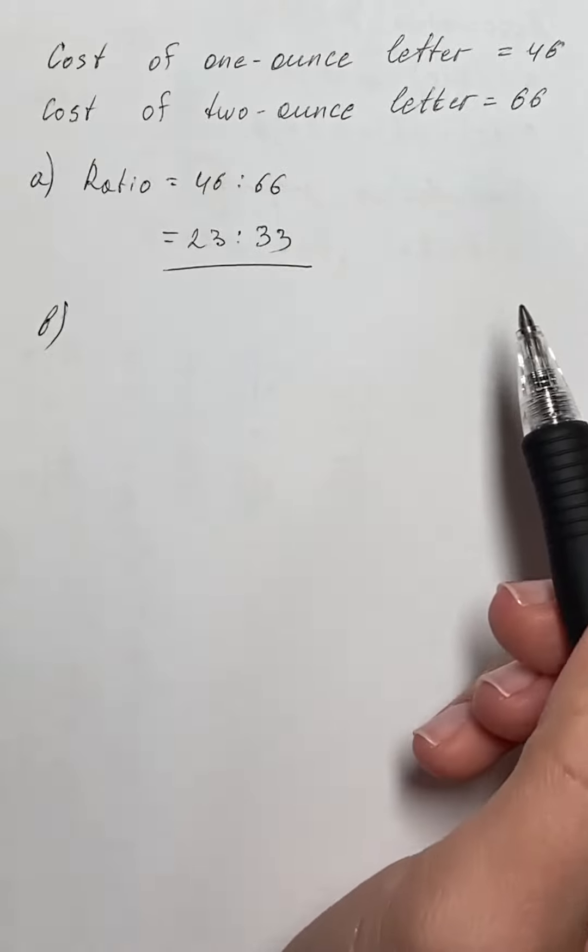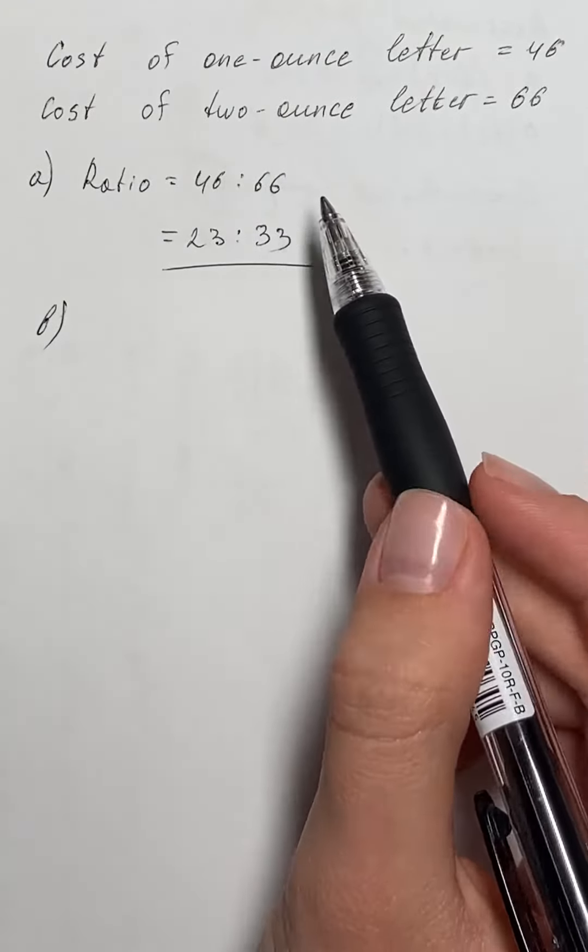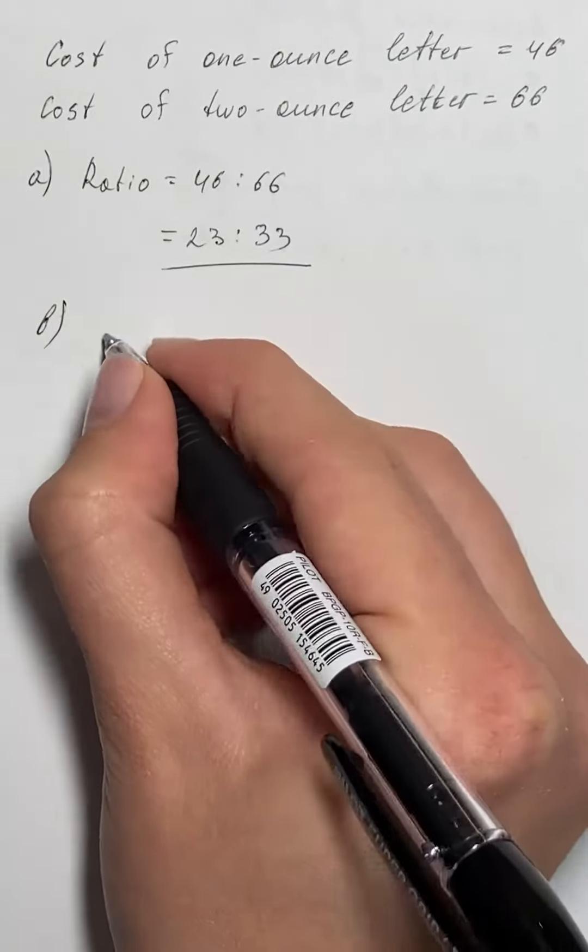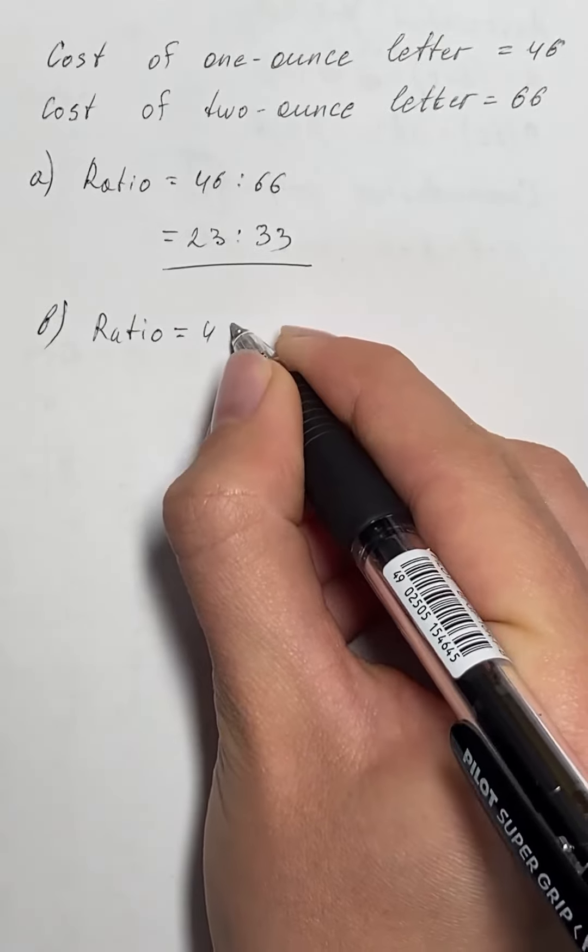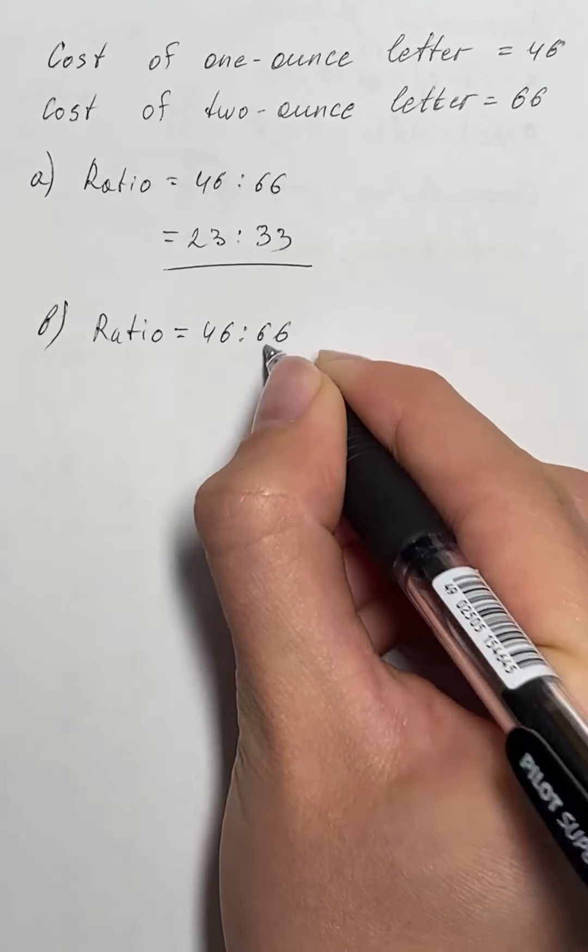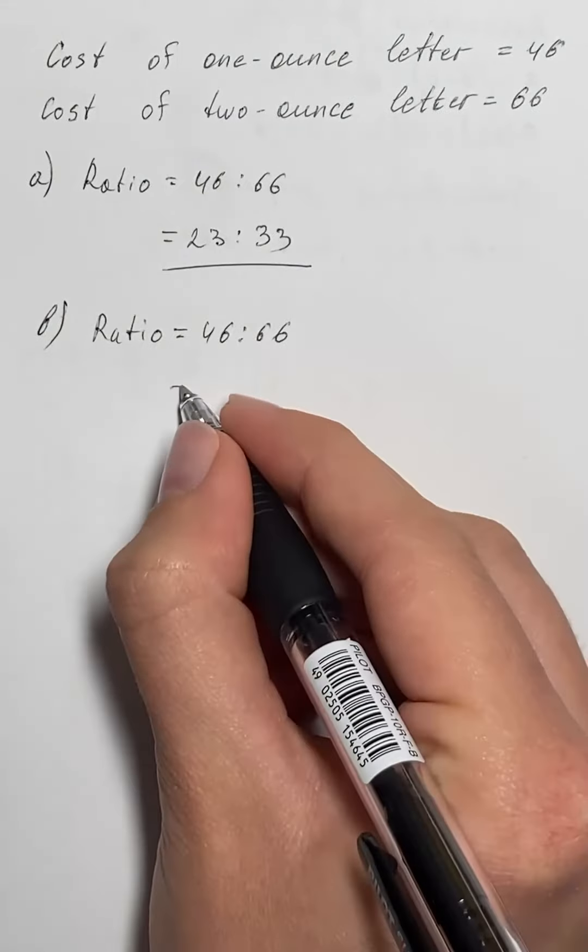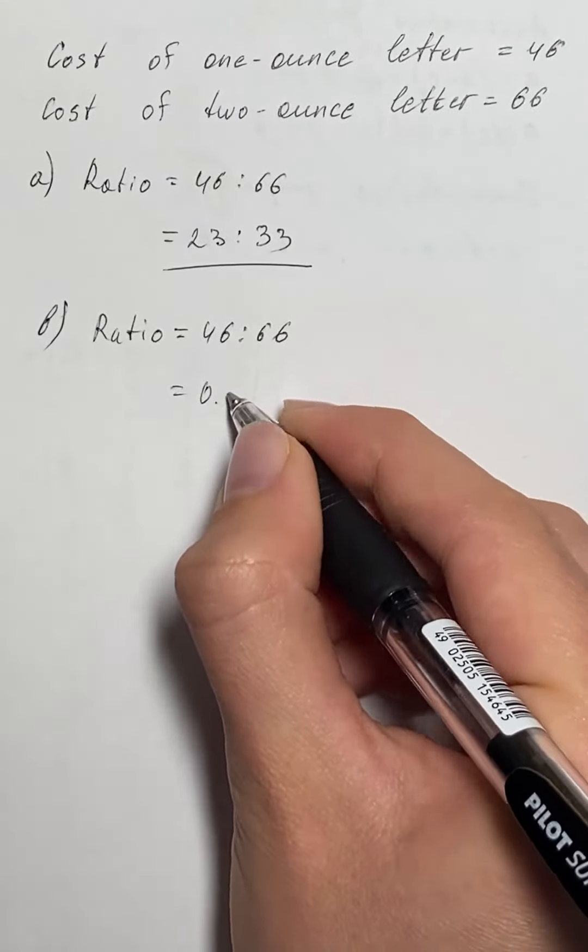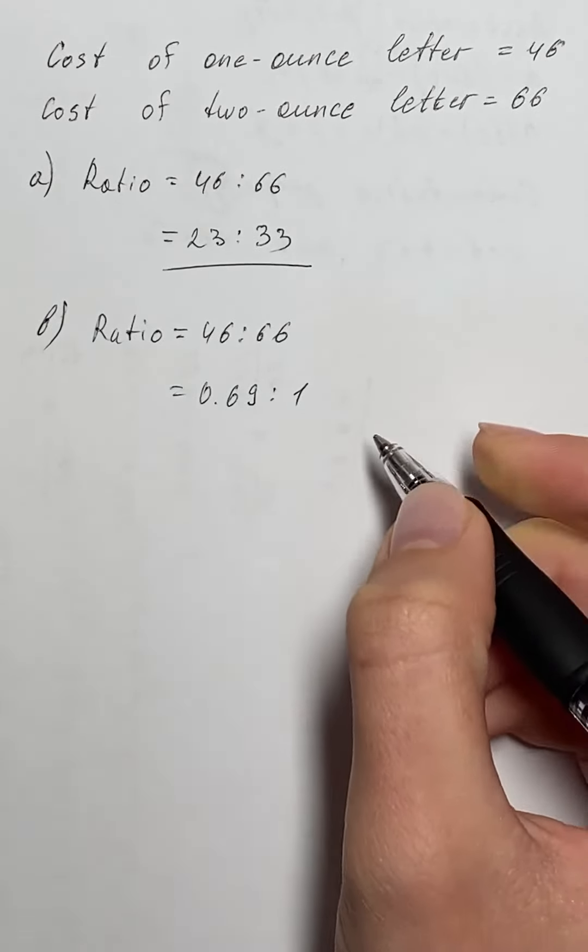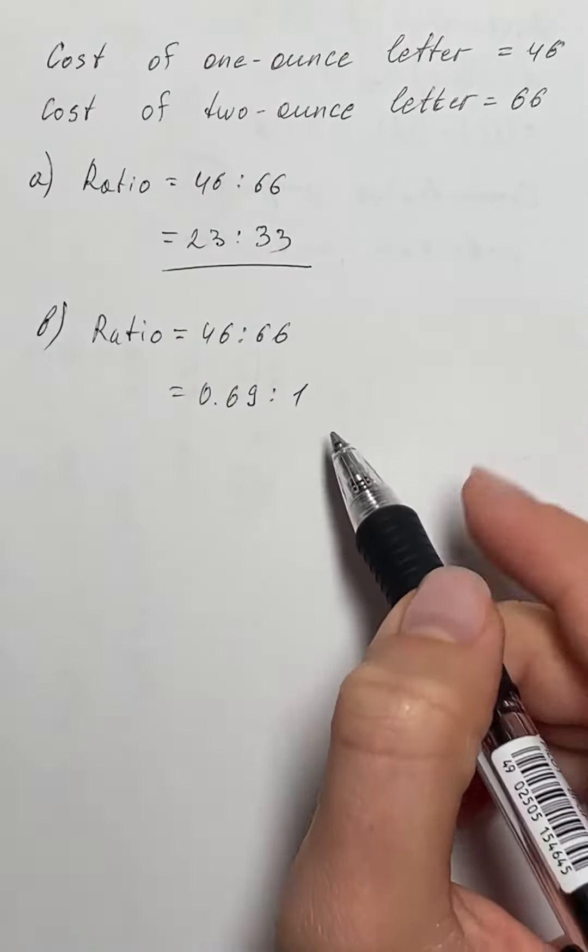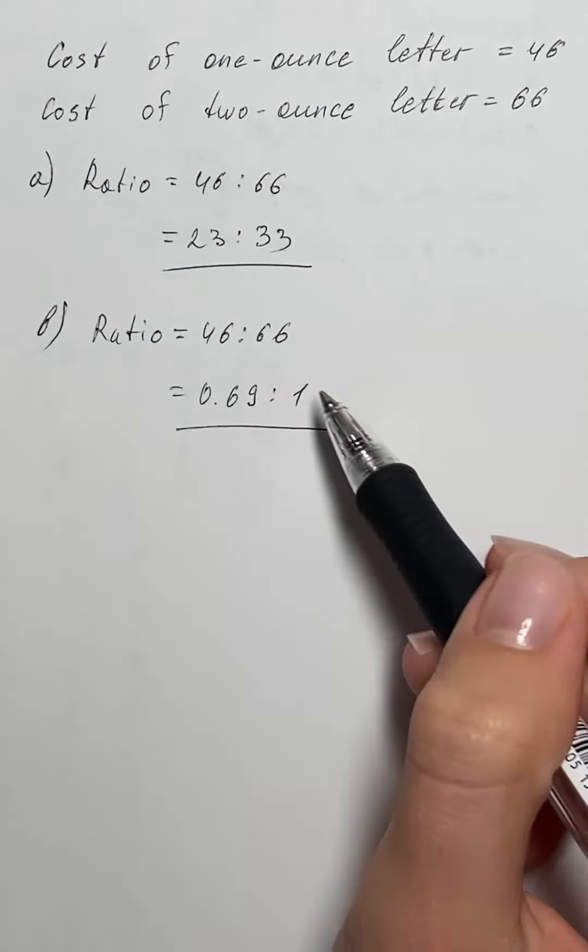So we just need to divide both terms of the ratio by the second term and we will get the ratio sum number to one. So we have our ratio that's 46 to 66 and we divide both terms by the second term. So we get 0.69 to 1. Therefore the ratio is sum quantity to one is 0.69 to 1. So this is our gear ratio.